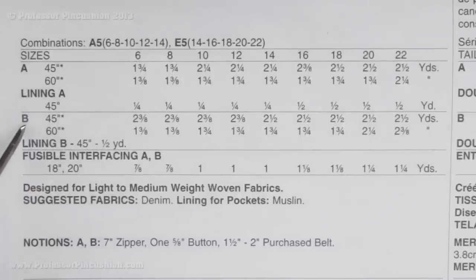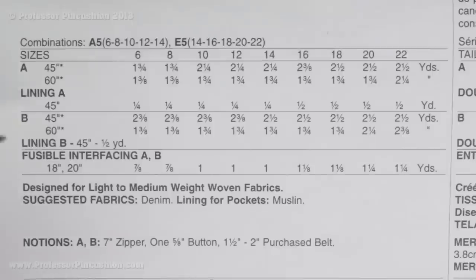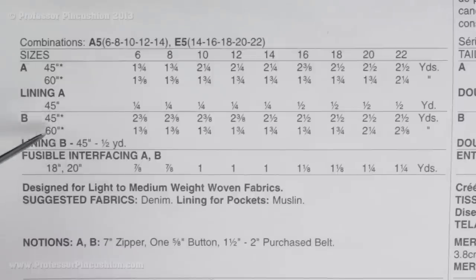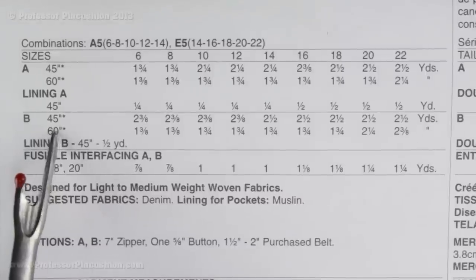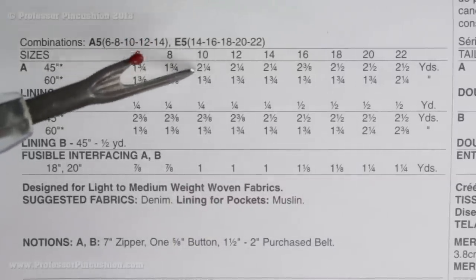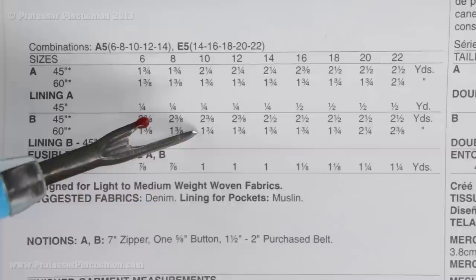This row is for view A and this is for view B. Since I'm doing pants B, I can go ahead and look directly at that row. You'll see 45 and 60 — this pertains to the width of the fabric. Normally fabric comes either 45 inches or 60 inches in width, and you look at the label on the fabric bolt to tell you the width. So if I pick denim that's 60 inches wide, I go across that row down to size 10 and it says I'm going to need 1 and 3 quarter yards of denim.